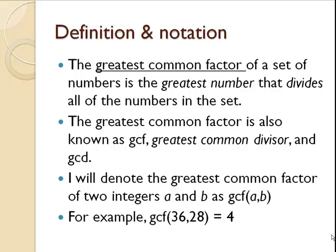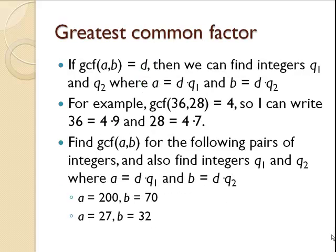The greatest common factor of 36 and 28 is 4. If the greatest common factor of a and b is d, that means we can find two integers, q1 and q2, where a is the product of the greatest common factor and q1, and b is the product of the greatest common factor and q2.